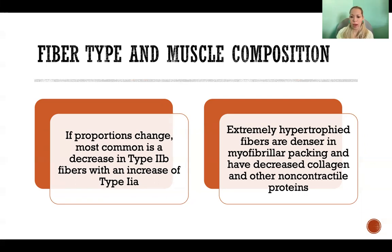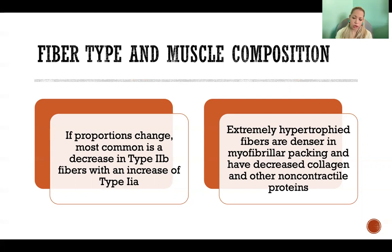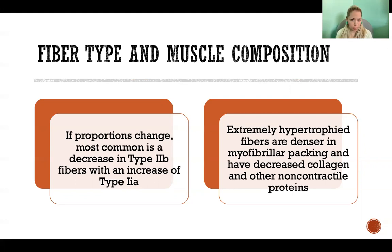With strength training, the shift would be more into type 2A. Extremely hypertrophied muscle fibers are denser in myofibrillar packing and have decreased collagen and other non-contractile proteins. So we might have a change in fiber type proportions and composition of the whole muscle, but the muscle fibers themselves are also going to be more densely packed. Even if the cross-sectional area of the fiber doesn't increase, the strength of that fiber will still increase because there'll be more myofibrils packed into a tighter space with less non-contractile proteins taking up space within that fiber.